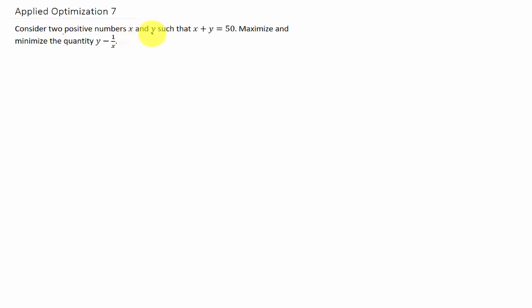Okay, we have two positive numbers x and y such that their sum is 50, and we want to maximize and minimize the quantity y minus 1 over x.